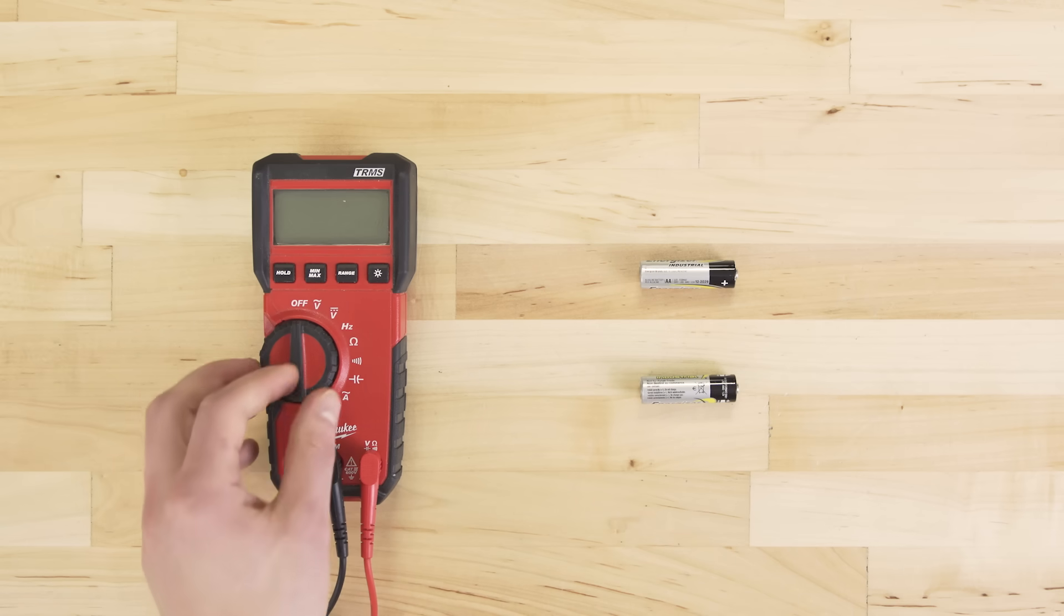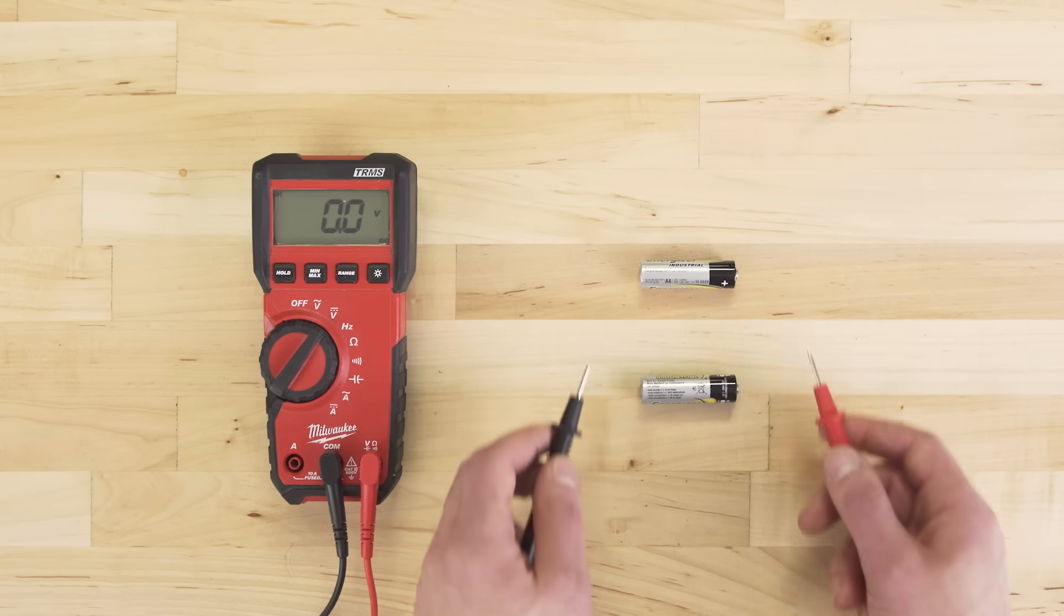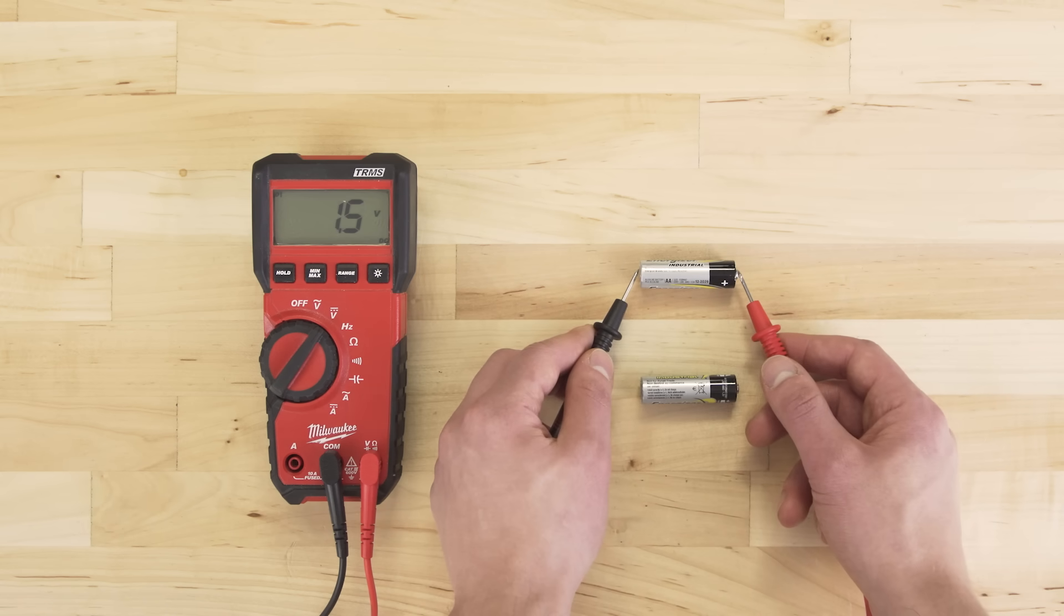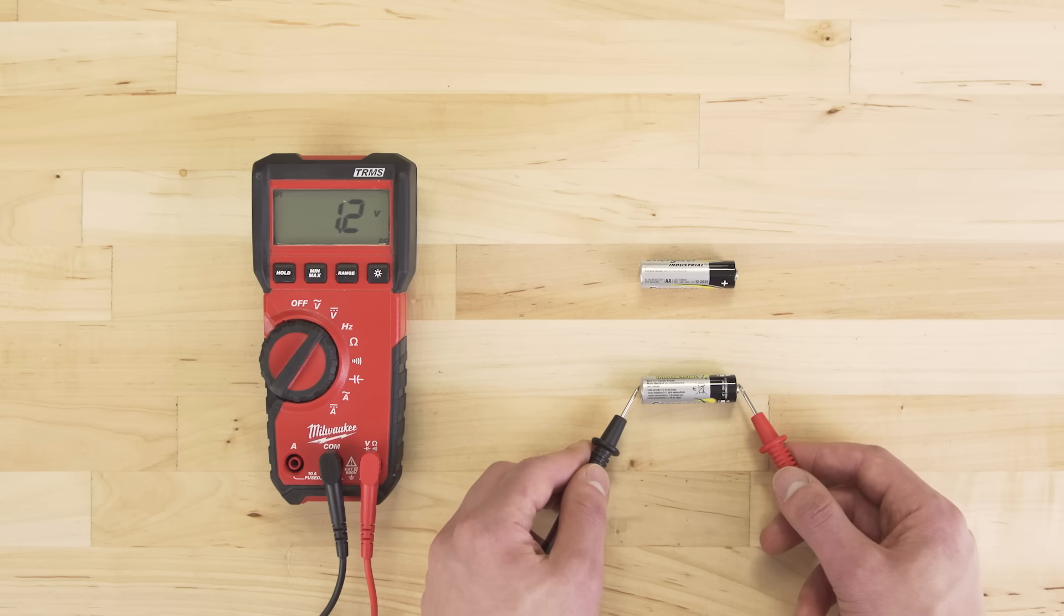The volts DC setting can be used to test batteries and other small electronics. For example, a fully charged AA battery will be close to 1.5 volts, whereas a weak battery will be much lower at 1.2 and should be replaced.